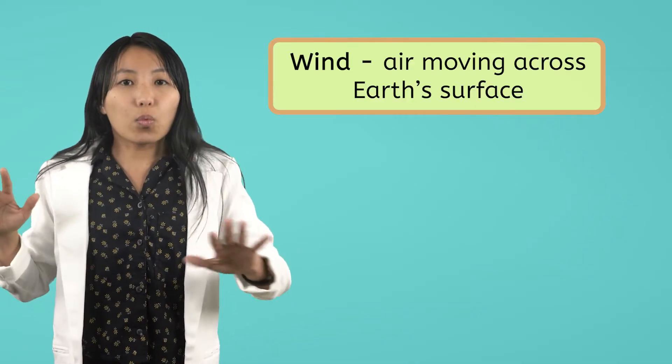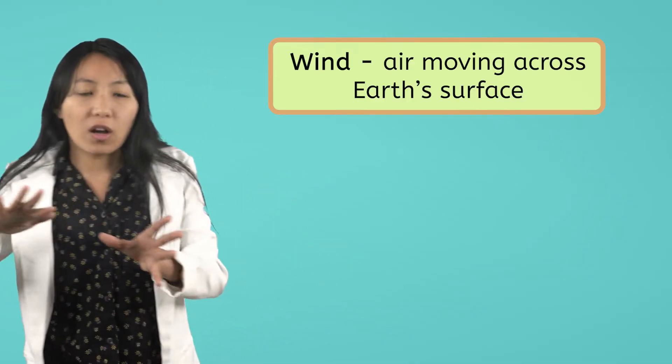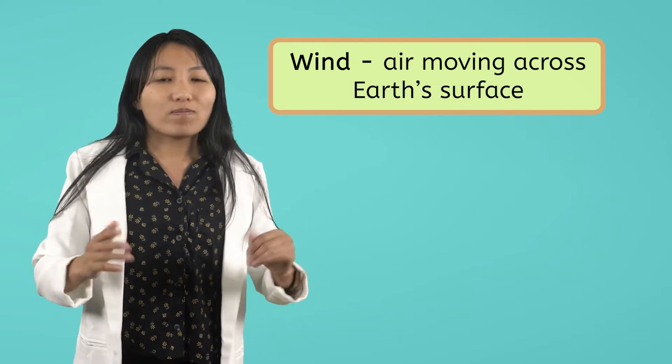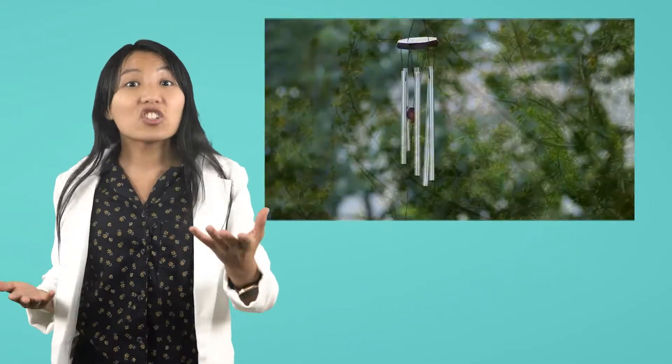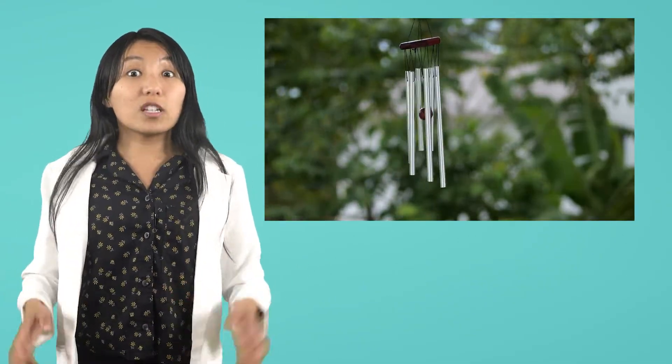Do you hear that? Another element of weather. The wind. Wind is air moving across Earth's surface. You can't actually see the wind, but you can see it moving things around, like tree branches or wind chimes. When the wind is really blowing, like it is today, it can sometimes lower the temperature outside.